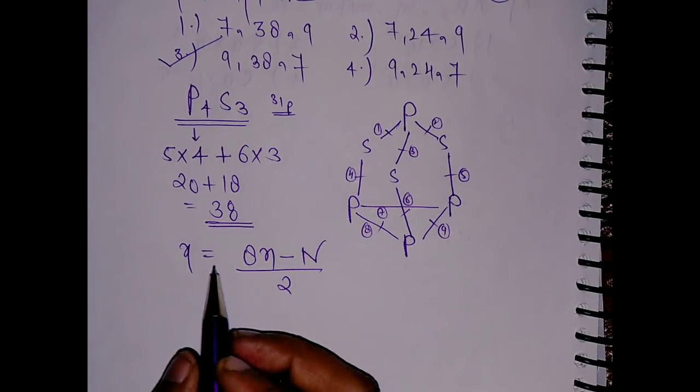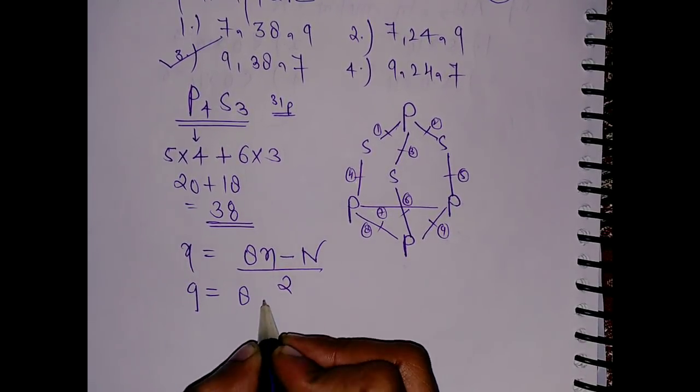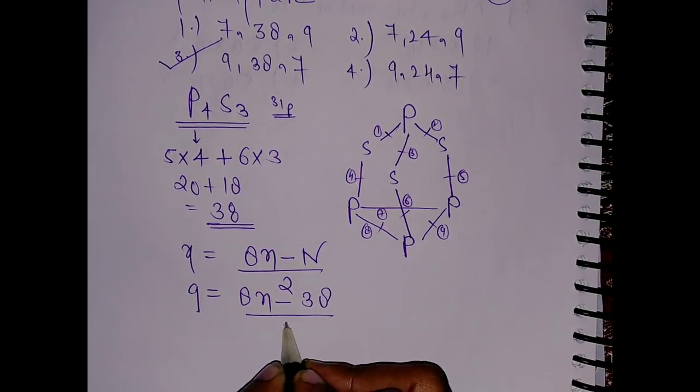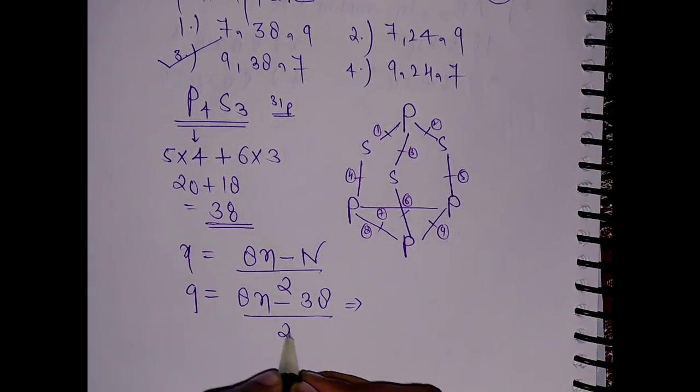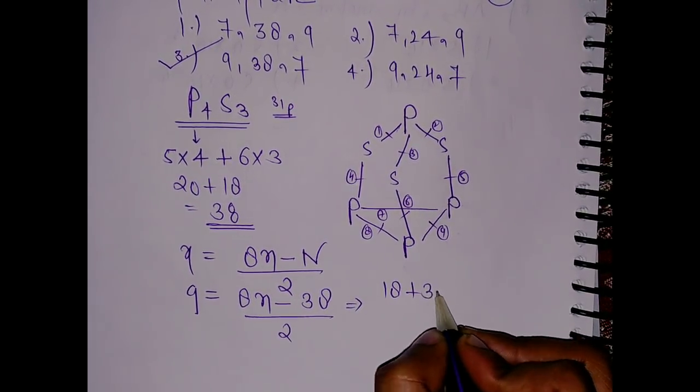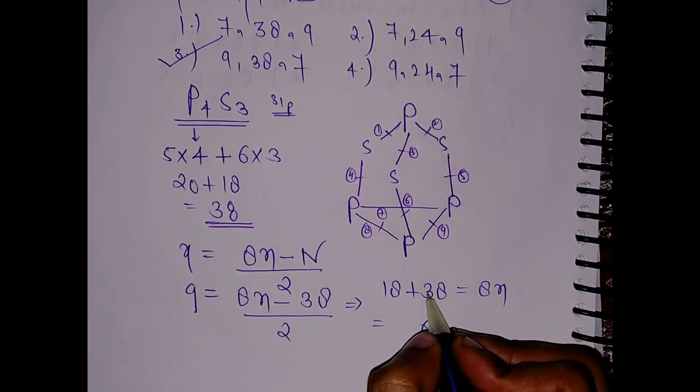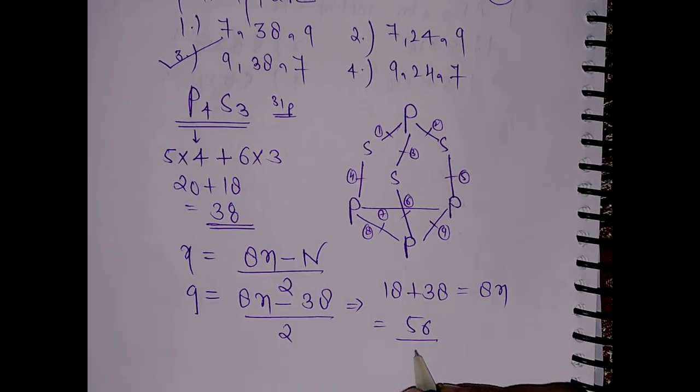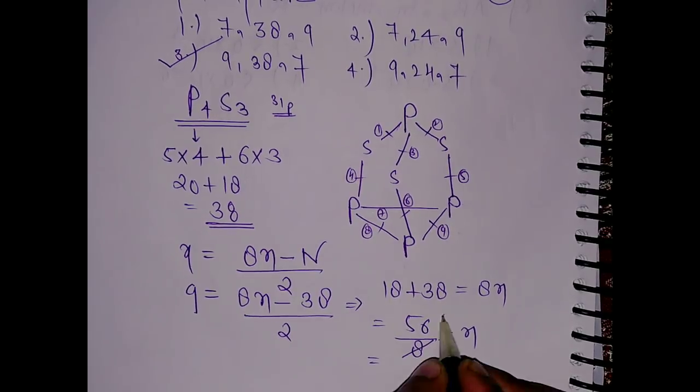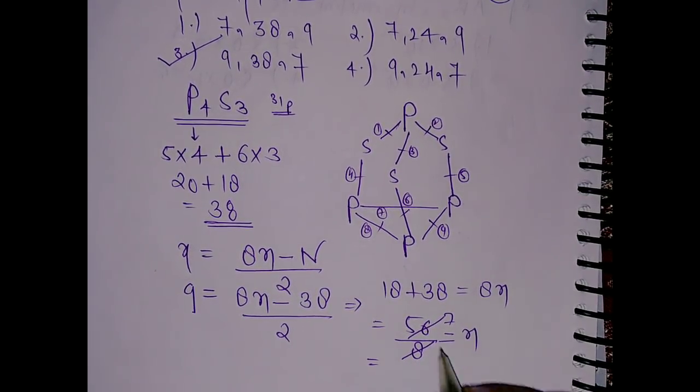So x we calculated as 9 equals to 8m minus n is 38 divided by 2. This is nothing but 9 equals to 18 plus this will become plus, so this is 38 equals to 8m. So this is 16, this is 56 divided by 8 equals to m. 8 sevens are 56, so we have m equals to 7.